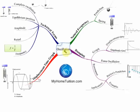From this mind map we can see there are a few things you need to know about oscillations. For example, you need to know some technical terms related to oscillations, such as what is meant by complete oscillations, equilibrium position, amplitude, period, and frequency.